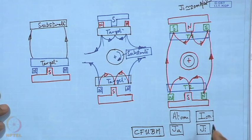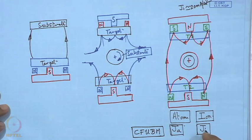This is called closed field unbalanced magnetron sputtering (CF-UBM). The fields are closed — not open — and this is possible by having two targets facing each other with proper magnetic coupling through correct placement of ring and pole magnets. Both atom flux Ja and ion flux Ji are important. The ion flux impingement on the substrate surface modifies the coating structure to meet functional requirements.